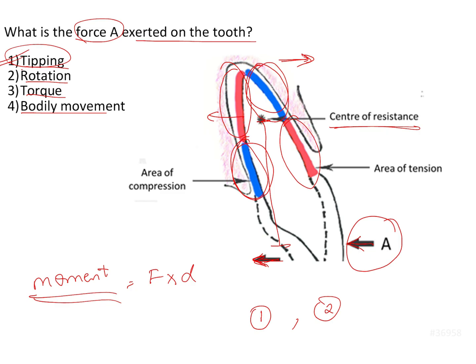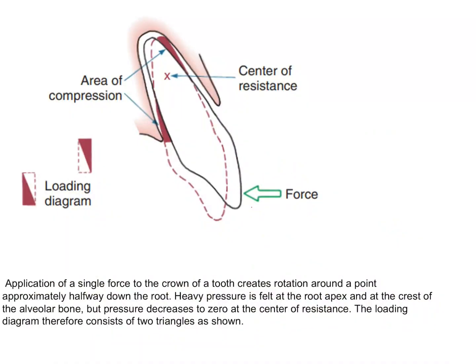This rotational tendency is occurring because the force is acting away from the center of resistance, resulting in both rotational and displacement tendencies. This rotation takes place in the labio-lingual direction, which is why the tipping type of tooth movement is going to be seen.